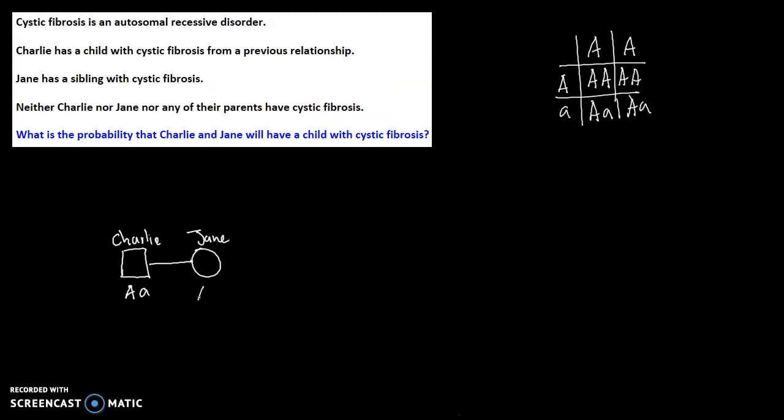As for Jane, she has this genotype as well. Upper case letter A and lower case letter a. And the probability of her having this genotype is two-thirds probability. Why?